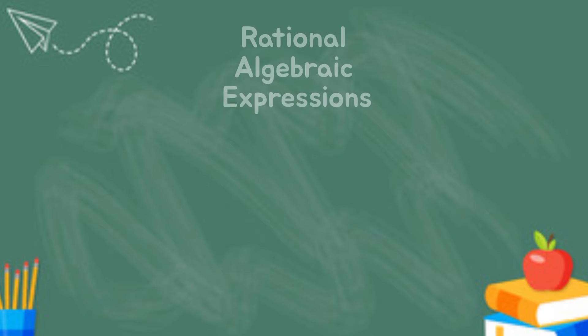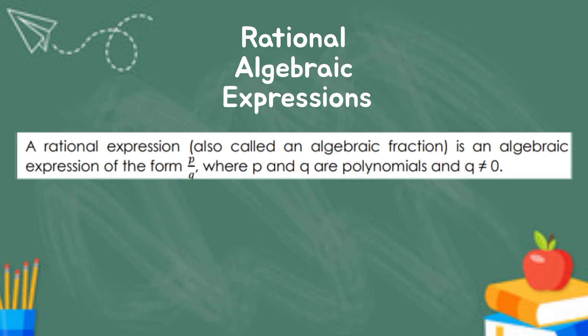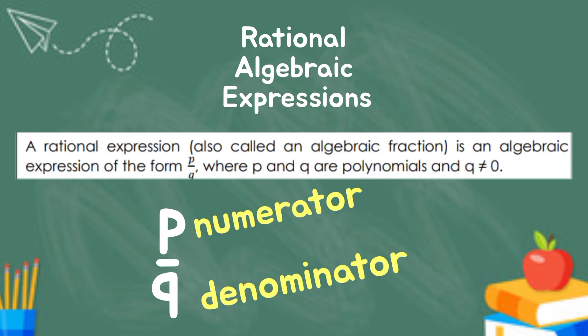Let's define them. A rational expression is an algebraic expression of the form P over Q, where P and Q are polynomials, and Q is not equal to zero. Focus your attention on the P over Q, meaning rational expressions are in the form of a fraction form, where P is the numerator and Q is the denominator, and they are both polynomials.